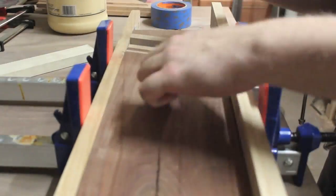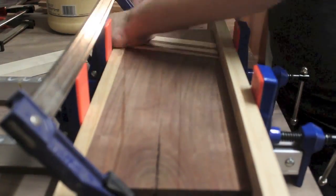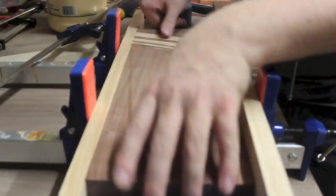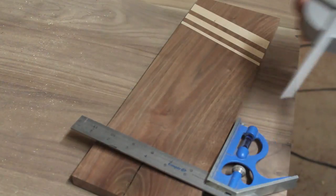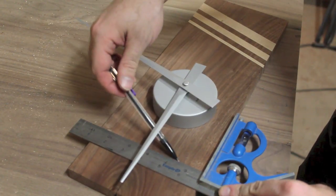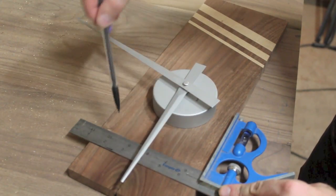I glued everything up with clamps and Titebond II wood glue. Here I'm just eyeballing what I want the final width of the board to be, which ended up being 13 and a half inches, and I made that cut on the miter saw.